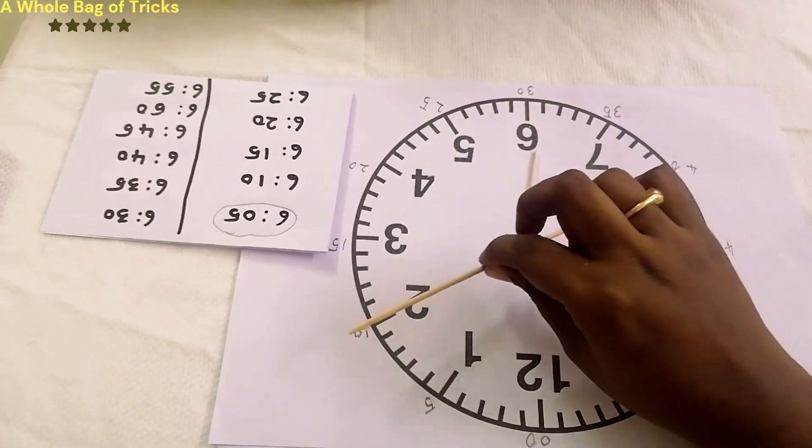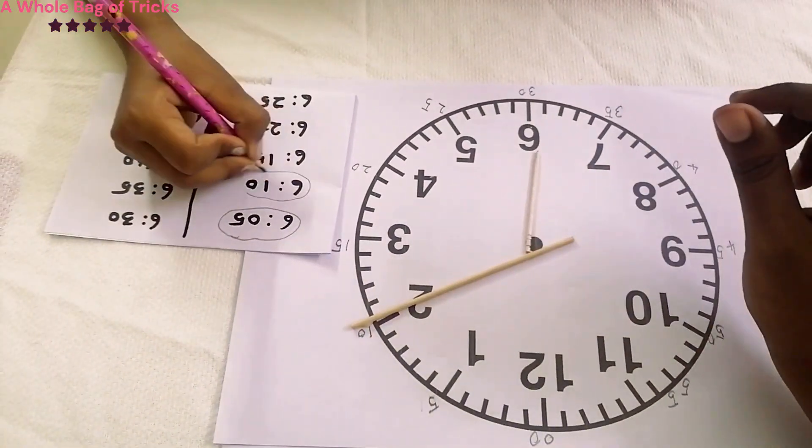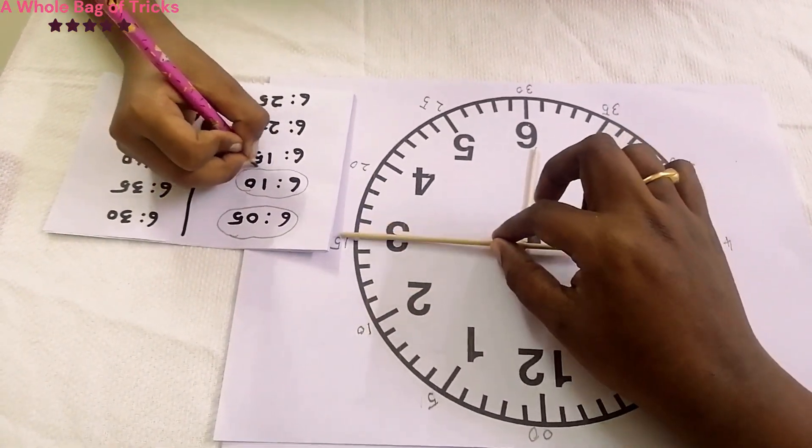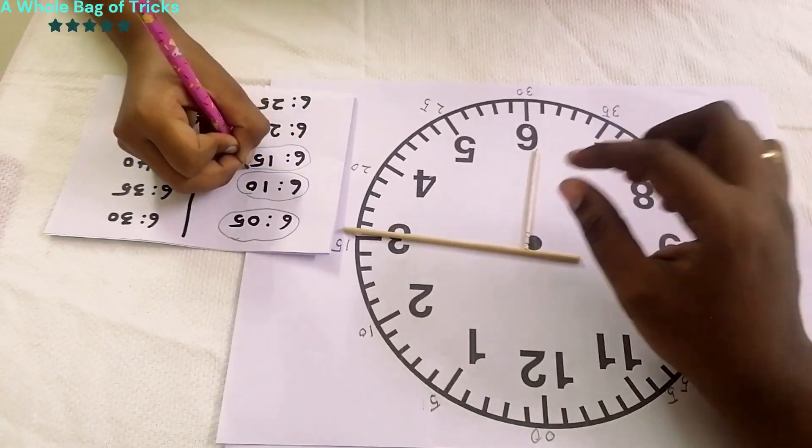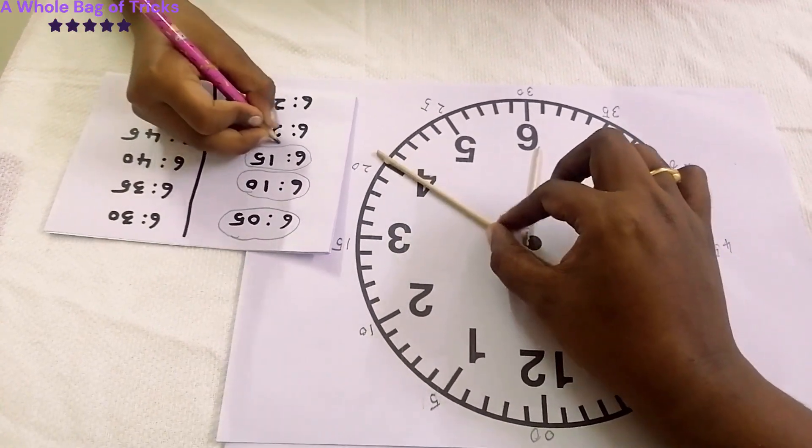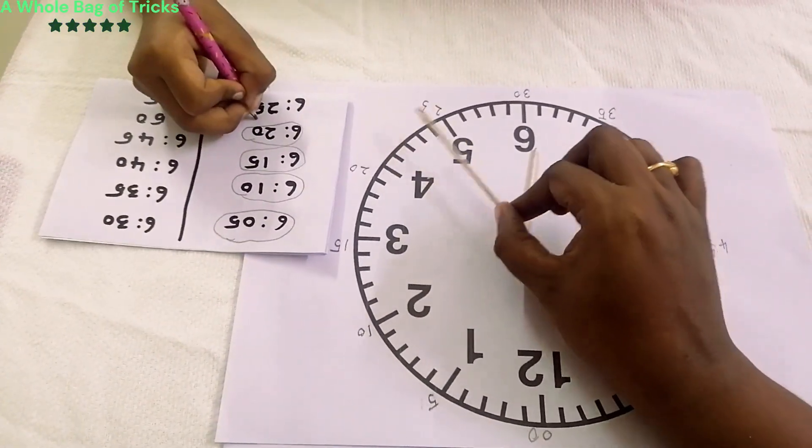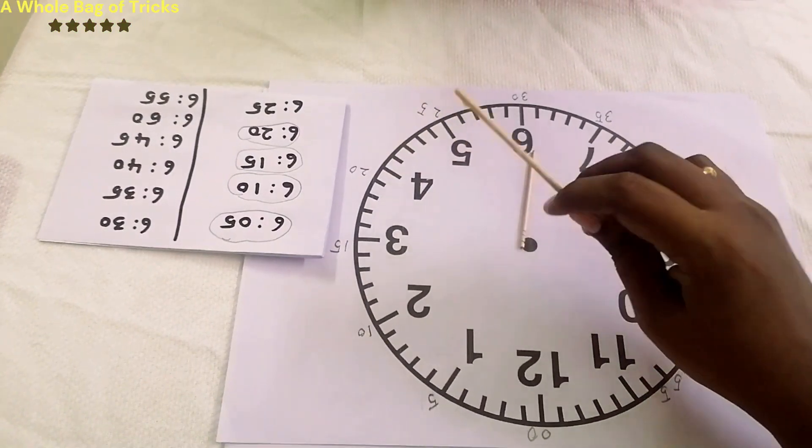So it will be 6:05, 6:10, 6:15 and so on. They can either use the fifth table or count it. It's up to your kid. Let them choose, select or write down each number each time as you change the minutes hand.